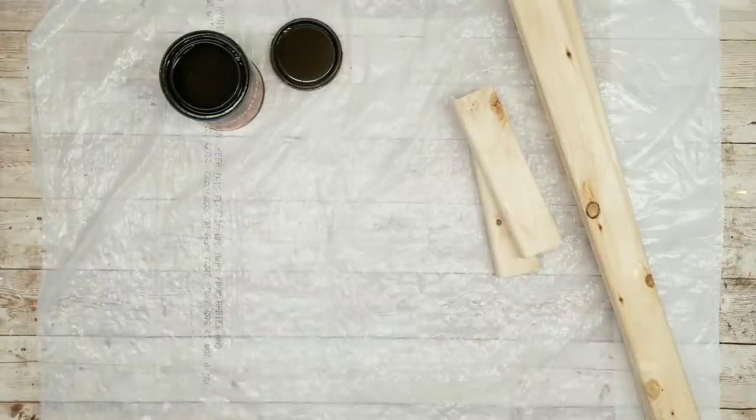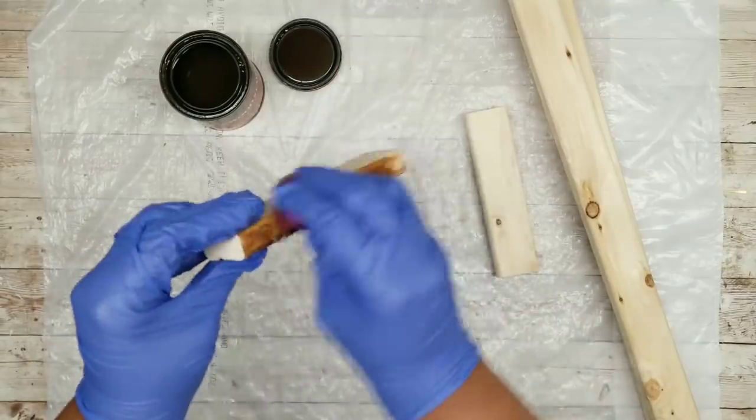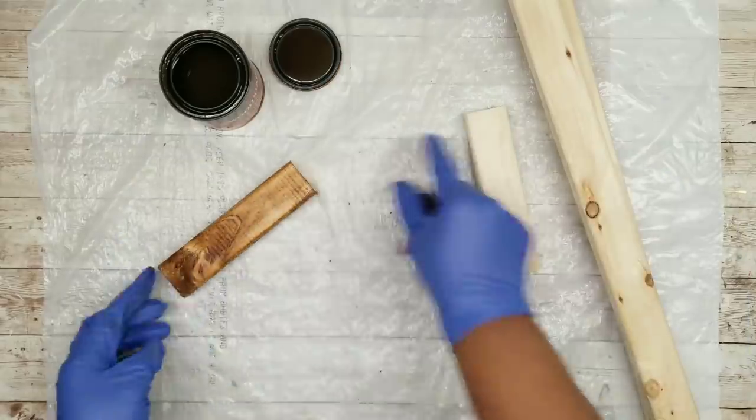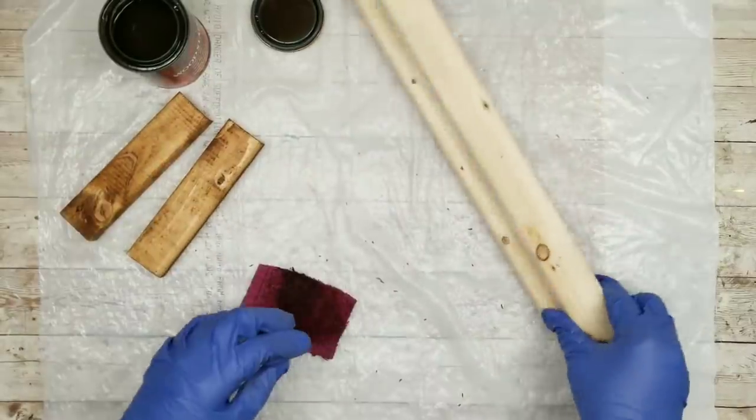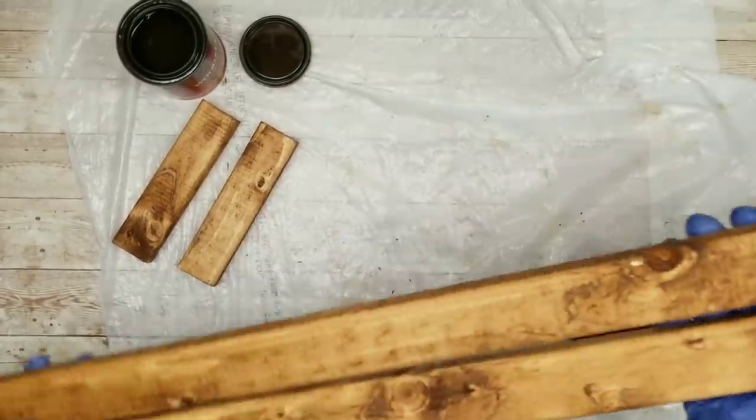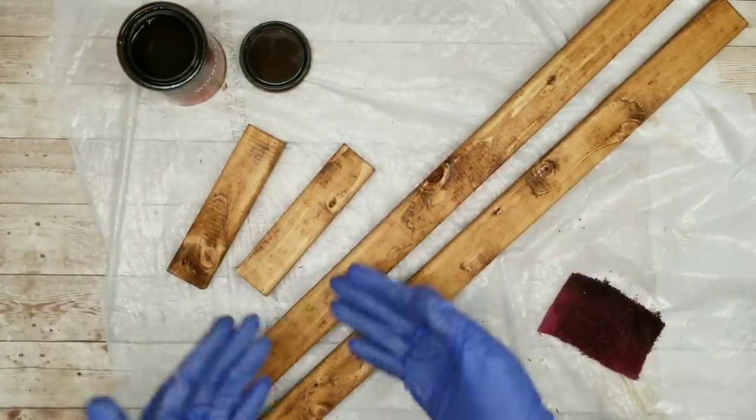I usually use my Jacobean stain, which I love, but in order to match my inspiration project, I am using this early American stain. So I'm going to stain the sides and the front of both of the small pieces, making sure you don't stain the back or the end pieces. For the two longer pieces, we do want to stain the ends as well as the front and sides, and then sit them out to completely dry.